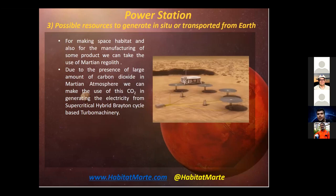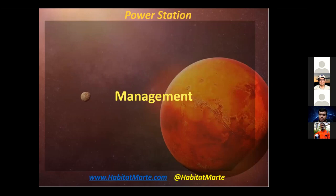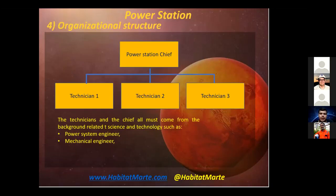Here are some possible resources to be generated in-situ or transported from Earth for the space habitat and manufacturing. We can use Martian regolith, and due to the large amount of CO2 present on Mars we can generate electricity from the supercritical Brayton cycle. The organizational structure will consist of a power station chief and three technicians, all of whom must come from a science and technology background such as power systems engineering or mechanical engineering.